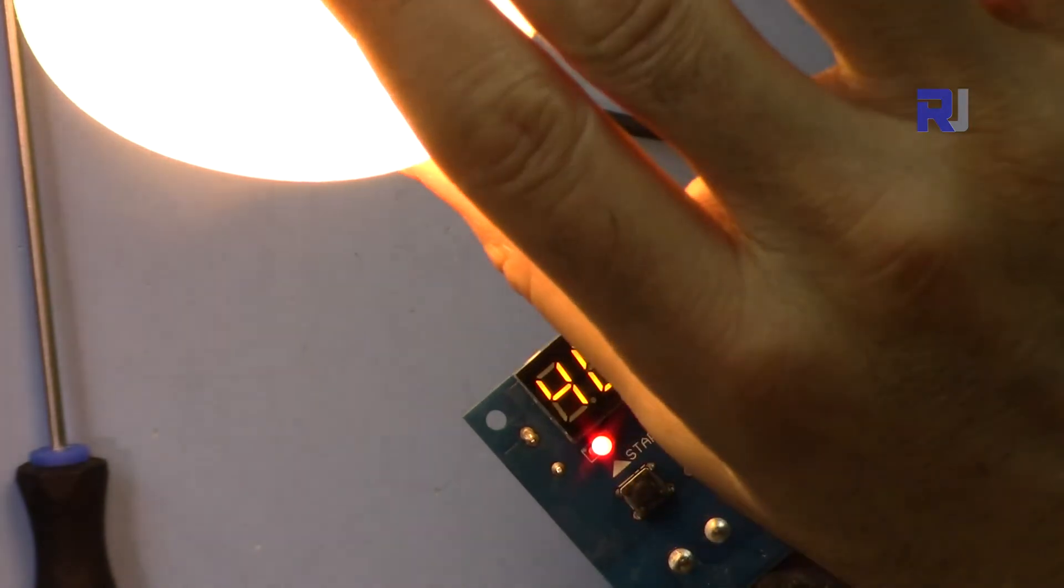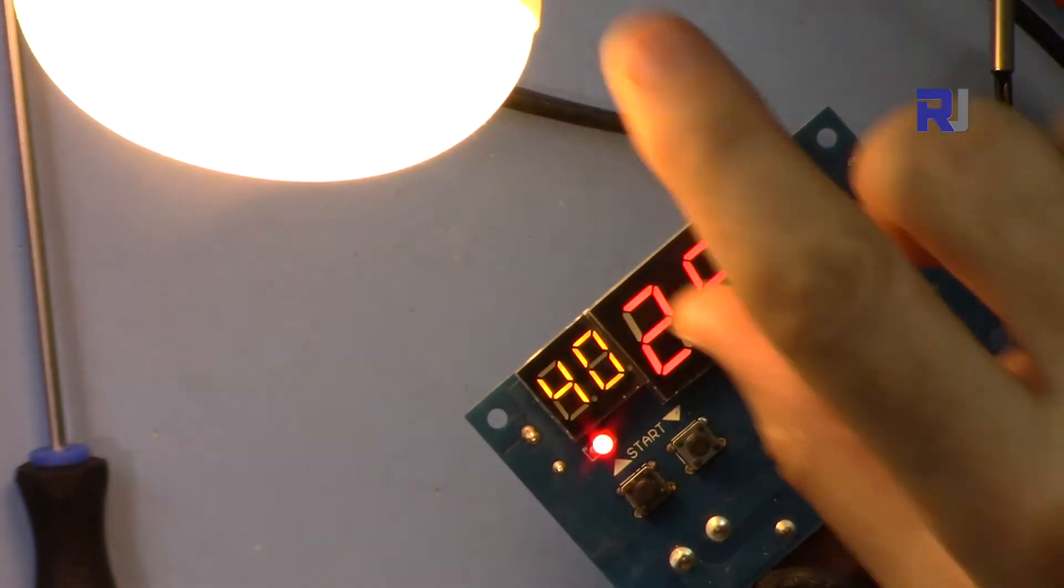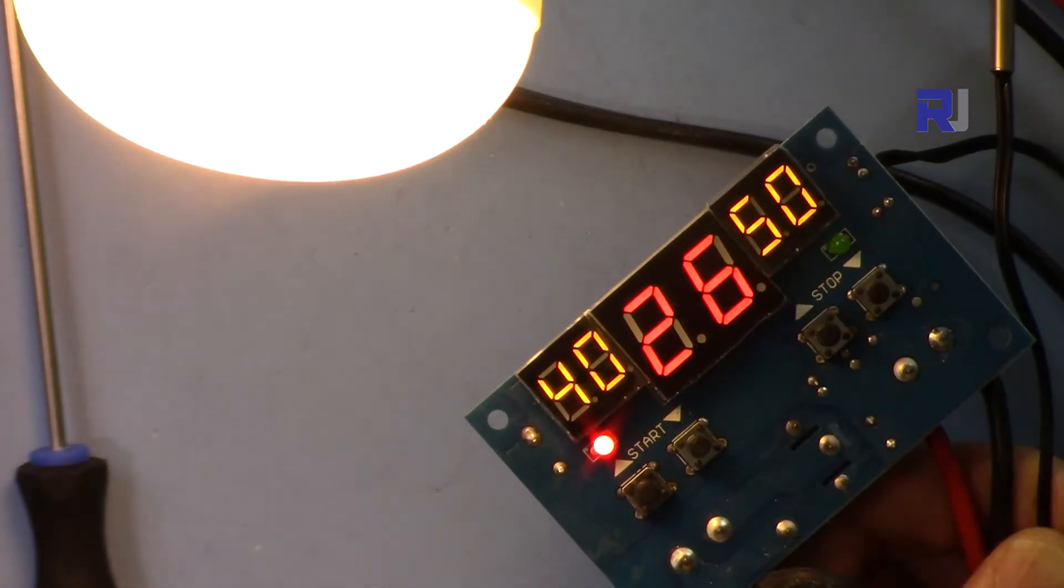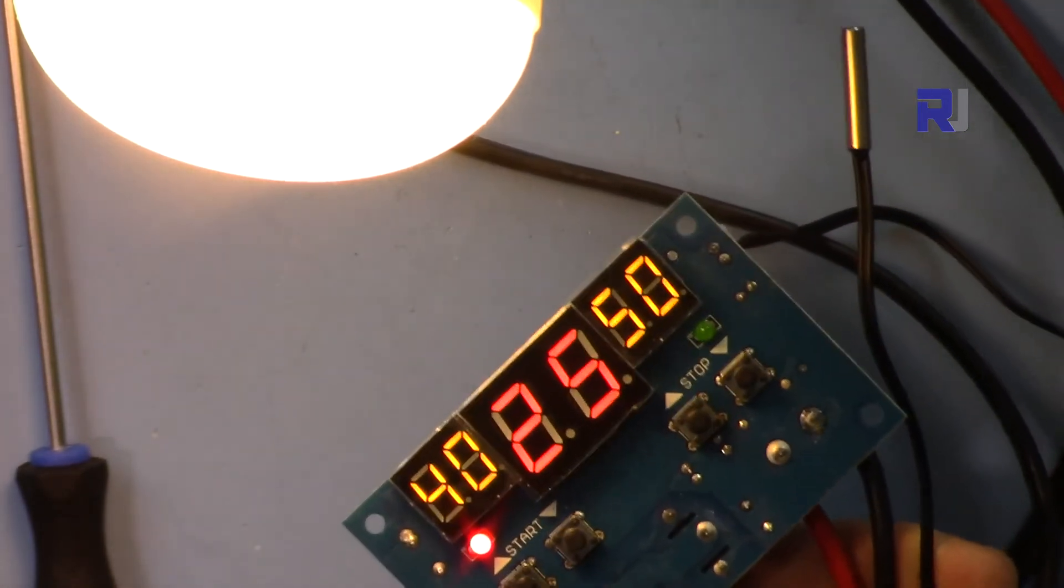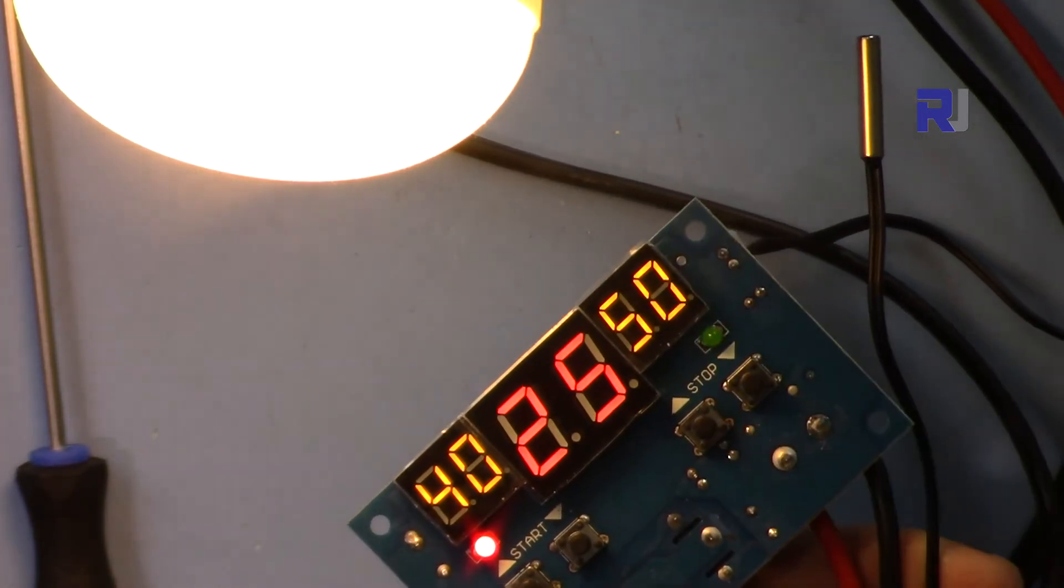Now the load is on, as you can see. This is the AC load. Let's say this is the heater. If I heat this up, the heater when it reaches 50 degrees will shut off.